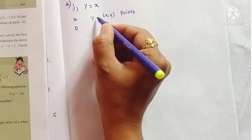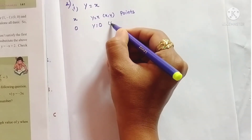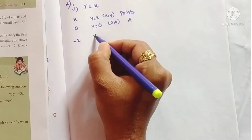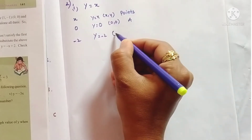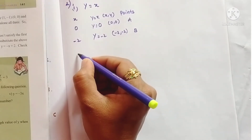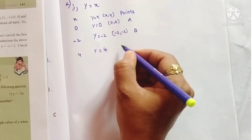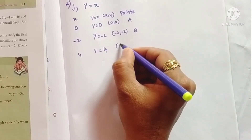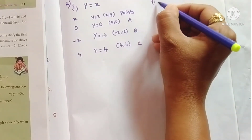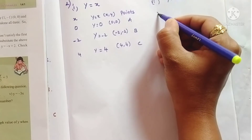For y = x: if x is 0, then y is also 0, giving point (0, 0). One negative value: if x is -2, then y = -2, giving point B (-2, -2). One positive value: if x is 4, y = 4, giving point C (4, 4).